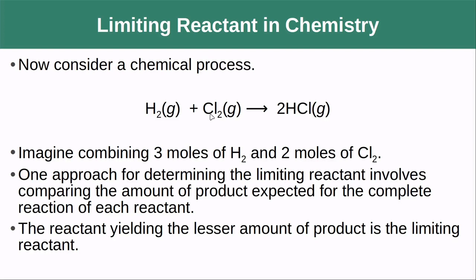Now let's see if we can apply this to our chemical equation. Consider the chemical process where we have a hydrogen molecule plus a chlorine molecule producing two HCl molecules. Imagine that we combine three moles of H₂ and two moles of Cl₂. In this simple example, where we can see that one mole of this is consumed for every one mole of this, we can see pretty clearly that we're going to use up the chlorine first. We're going to use up two moles of chlorine — that limiting reagent is going to be completely consumed. We're going to need to consume two moles of hydrogen in doing so, and we're going to have one mole of hydrogen left over.